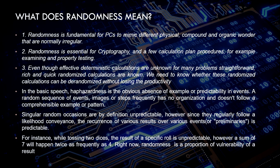In the basics, the first point is the obvious absence of pattern or predictability in events. A random sequence of events, images, or steps frequently has no organization and doesn't follow a comprehensive pattern. Singular random occasions are by definition unpredictable. However, since they regularly follow a likelihood of events, the frequency of various results over various events is predictable.